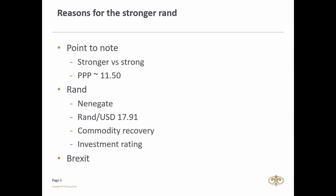That PPP level of 11 rand 50 is measured over a time frame since 1994, the start of our democracy. If we measure back to 1974, just after the oil crisis, the PPP is estimated to be roughly around 9 rand 50 to the US dollar.